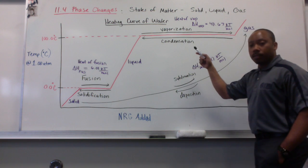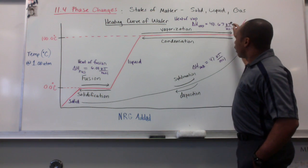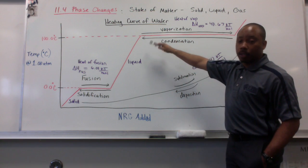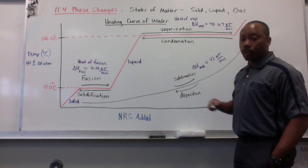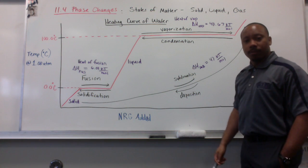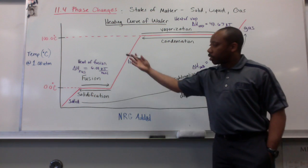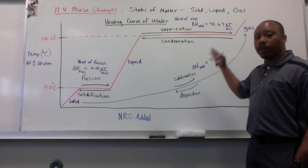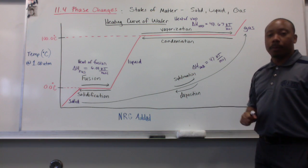For vaporization, it also requires a certain amount of energy, 40.67 kilojoules for every one mole of liquid water to vaporize into gaseous steam. We call this the heat of vaporization or delta H VAP, V-A-P. Sublimation is just a combination of both of these. You add these up and get approximately 47 kilojoules per mole to get the enthalpy of sublimation.